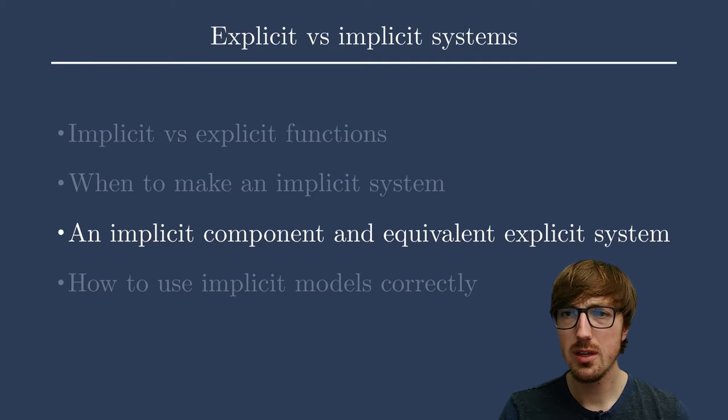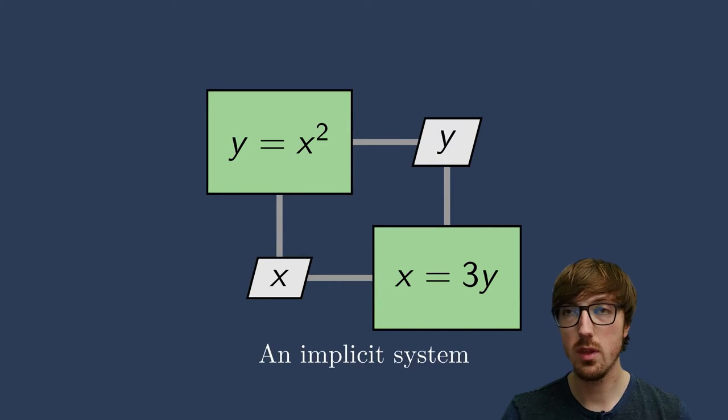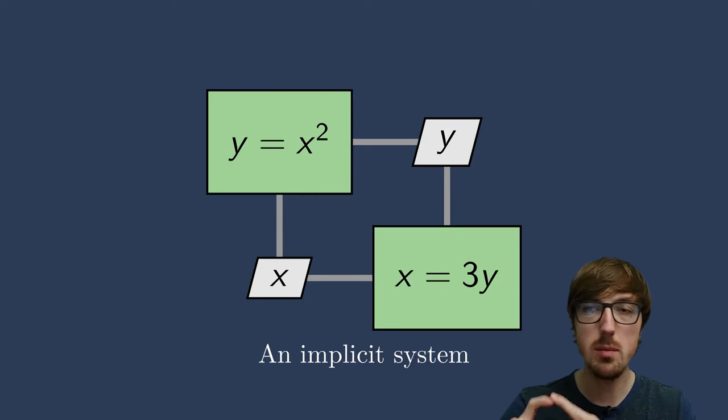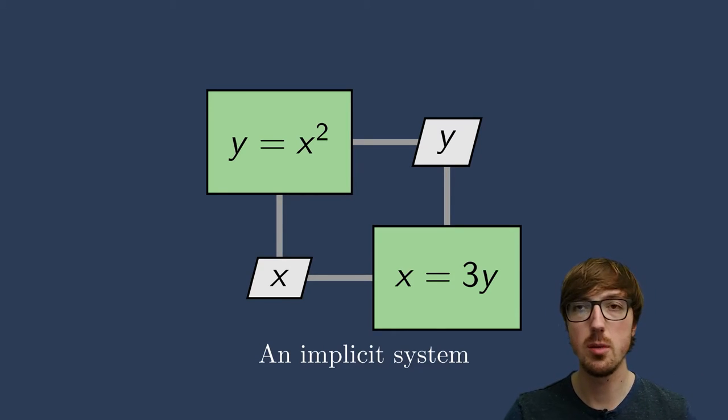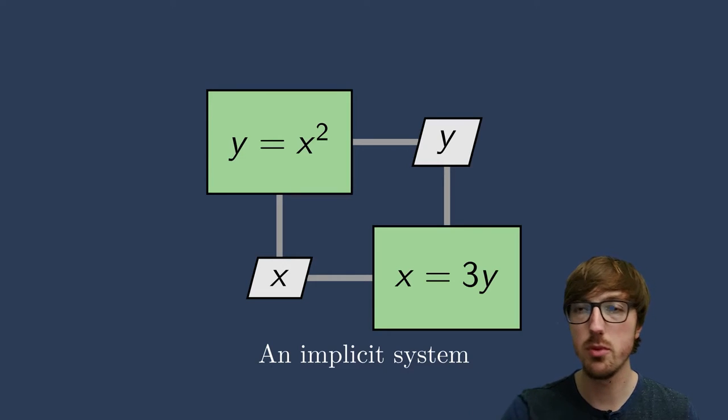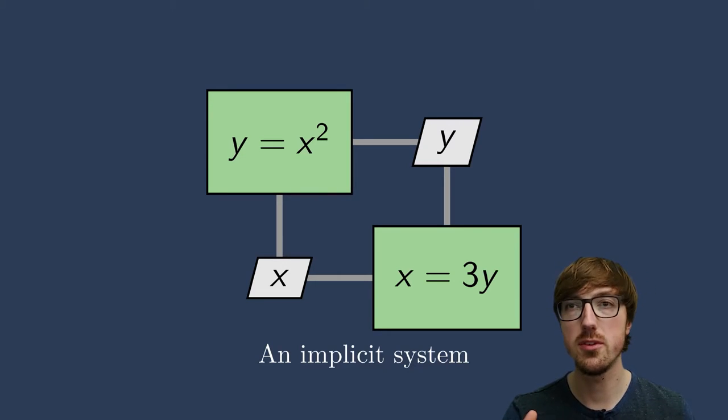Okay, back to the show. Let me walk you through the idea of an implicit component and an equivalent explicit setup. So here is an implicit system, and I want to show you this because it's a very important nuanced idea. Here we have two components. One of them is computing y, y equals x squared, and another is computing x, x equals 3y. Each one of these green blocks by itself is an explicit component. You can see that the inputs are only what's needed to compute the outputs. However, by putting them together, by creating this coupled system, we actually have an implicit system, despite the fact that each one of these components itself is only explicit.